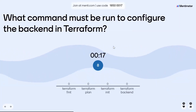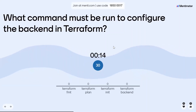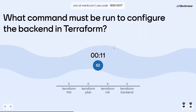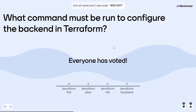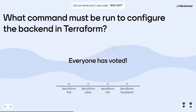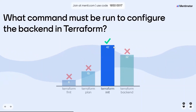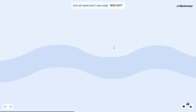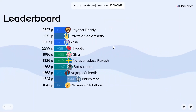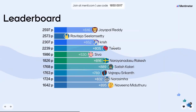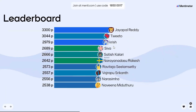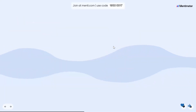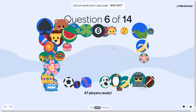What command must be done to configure the backend in Terraform? The answer is 'terraform init' — it automatically initializes the backend, either local or remote state. Okay, Jaypal, Tweeto, and Krish. Congrats! Next question.